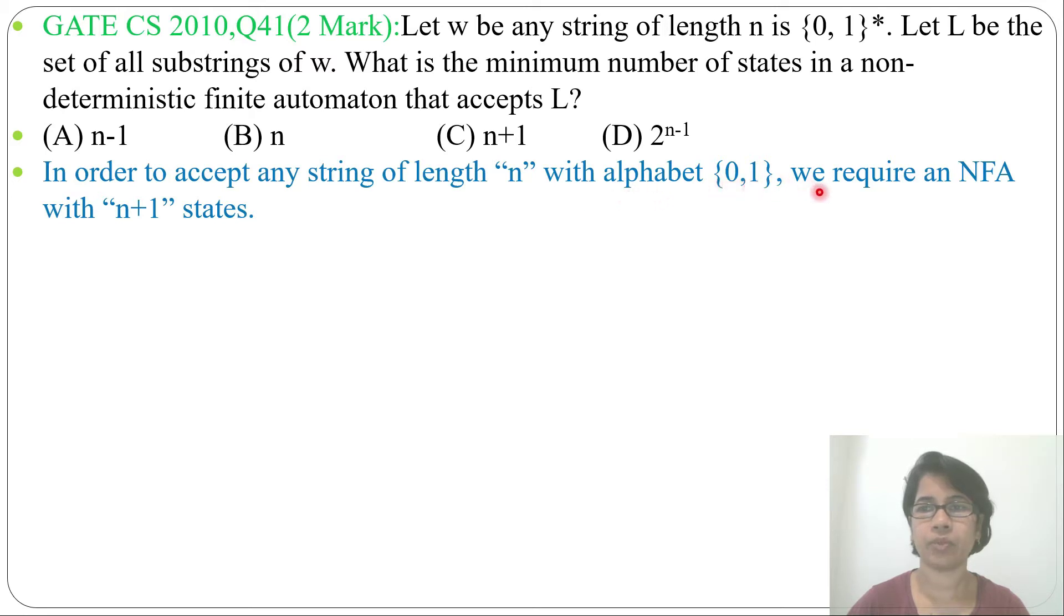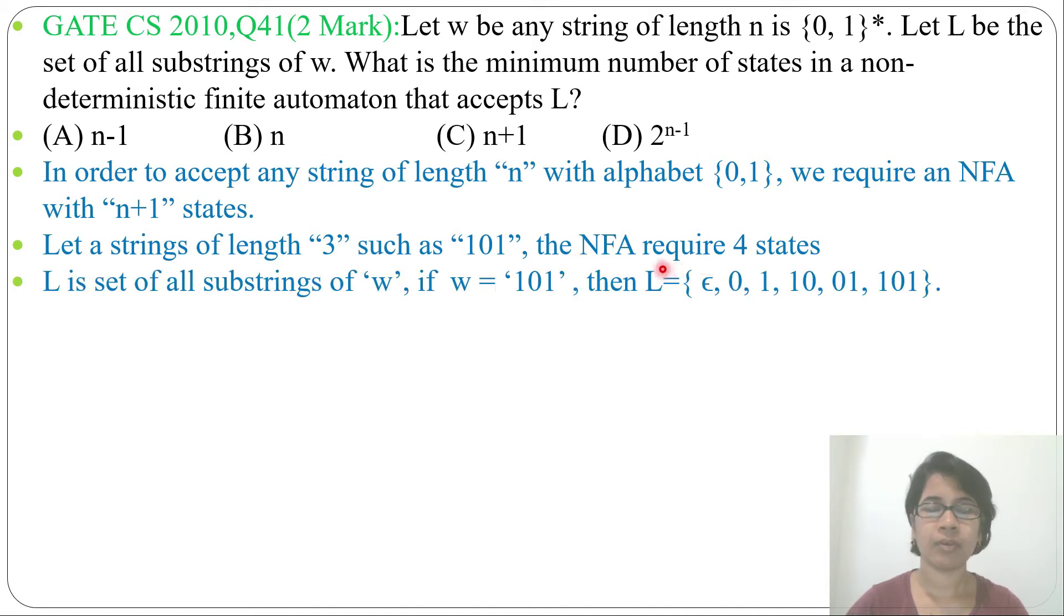In order to accept any string of length n with alphabet {0,1}, we require an NFA with n+1 states. Let's take a string of length 3, such as "101". The NFA will require 4 states.